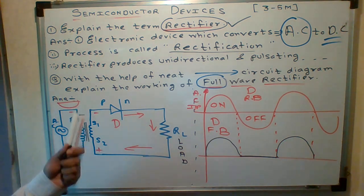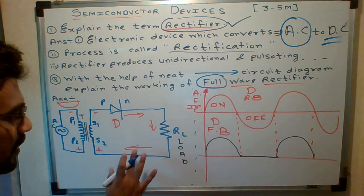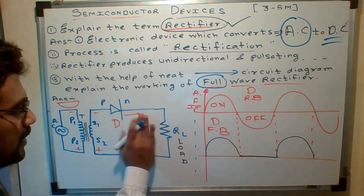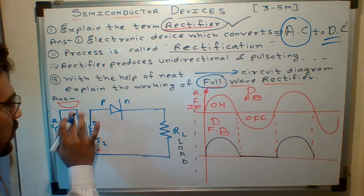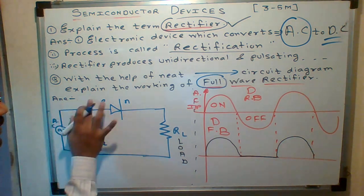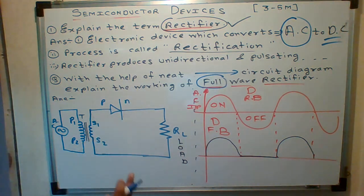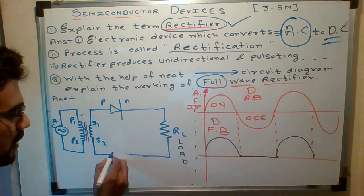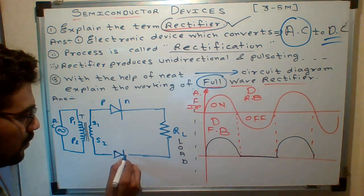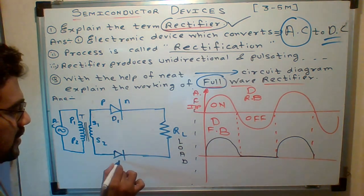Now listen, students. This is the circuit of a half-wave rectifier. I am going to make some changes. I will remove the red part because I have to draw the blue part first. In a full-wave rectifier, I am going to connect one more diode. This is diode D1 and this is diode D2.